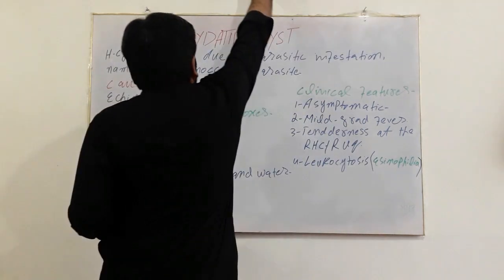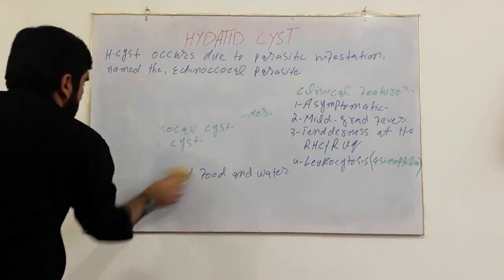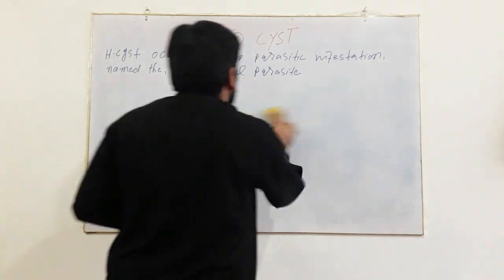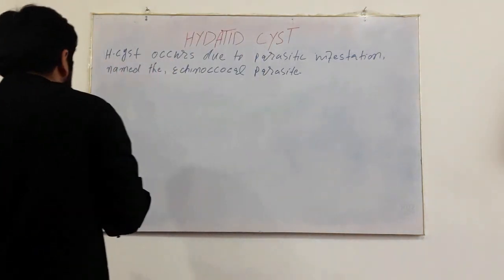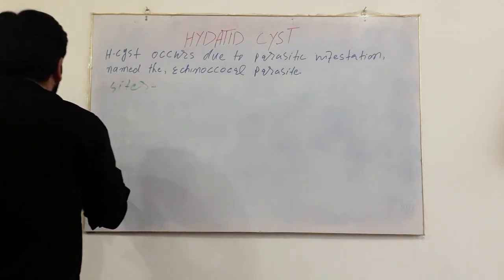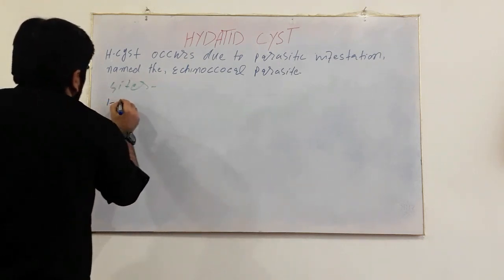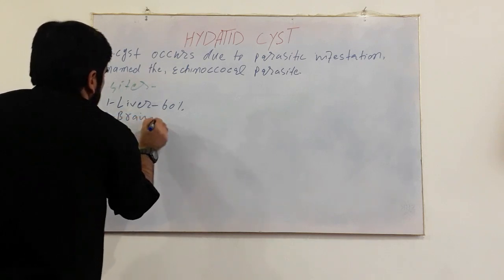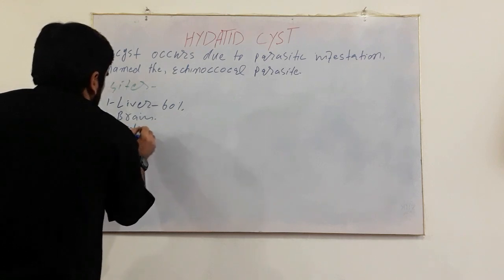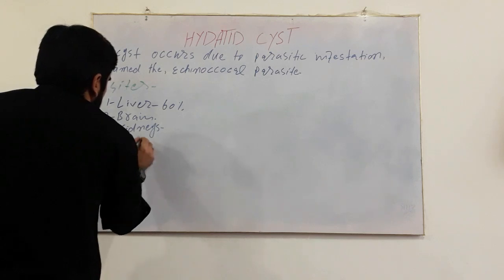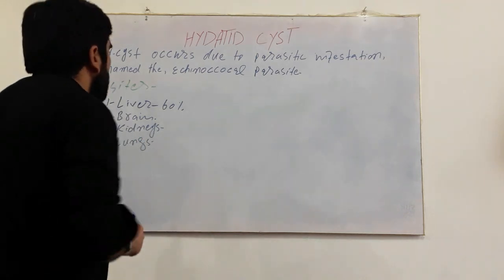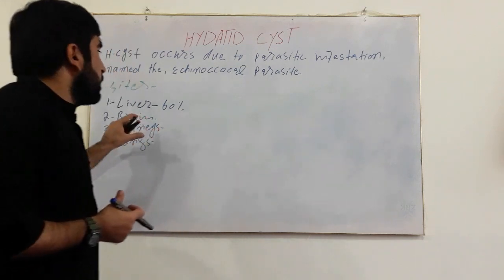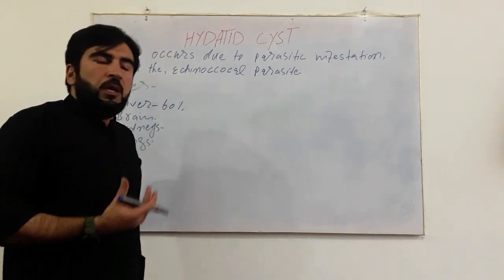The sites of occurrence of hydatid cysts: first, it occurs in the liver at nearly 60%. Second, the brain, kidneys, and lungs. The most prone organ is the liver because it has a direct connection with the small intestine via the portal vein, and through that portal vein it can easily spread to the liver.